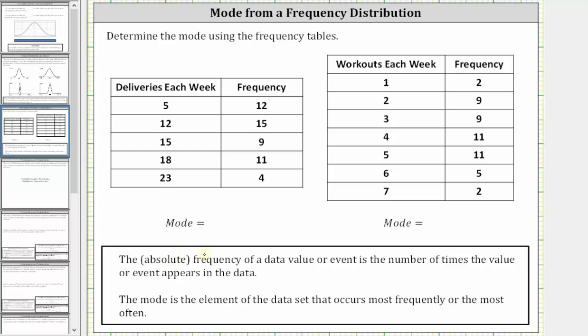For a quick review, the absolute frequency or frequency of a data value or event is the number of times the value or event appears in the data. And the mode is the element of the data set that occurs the most frequently or the most often.